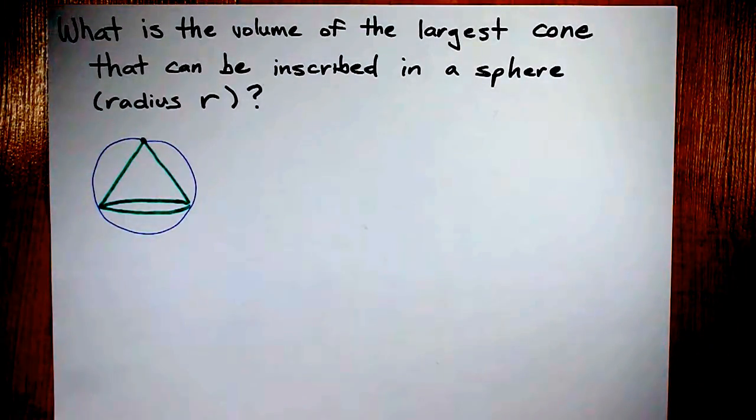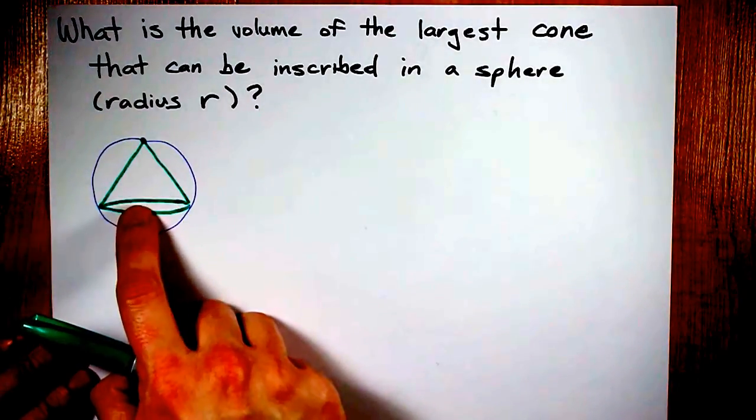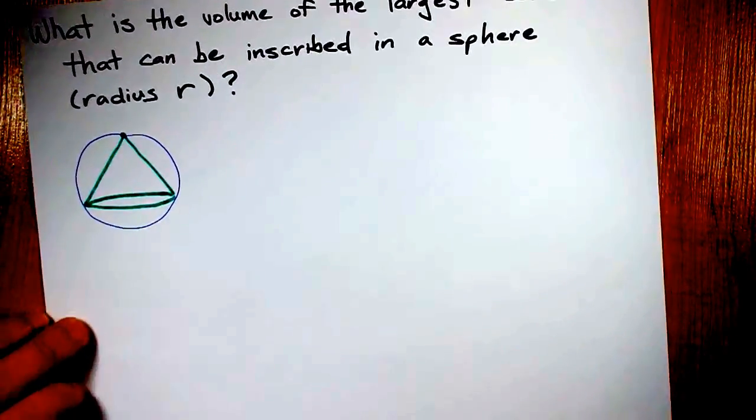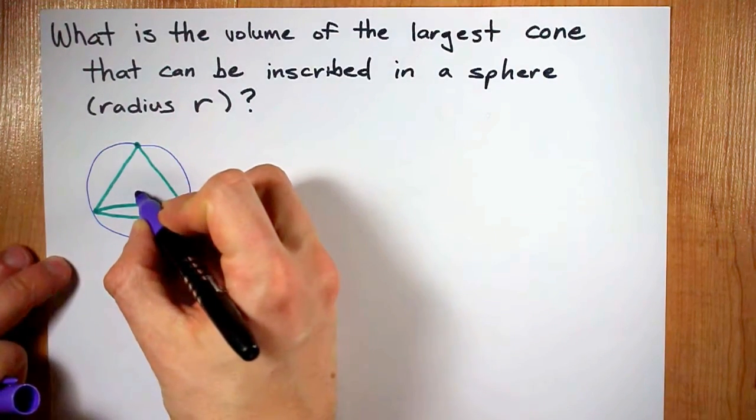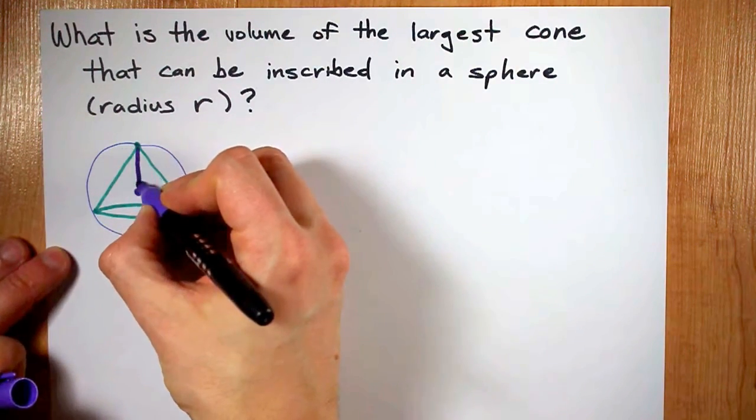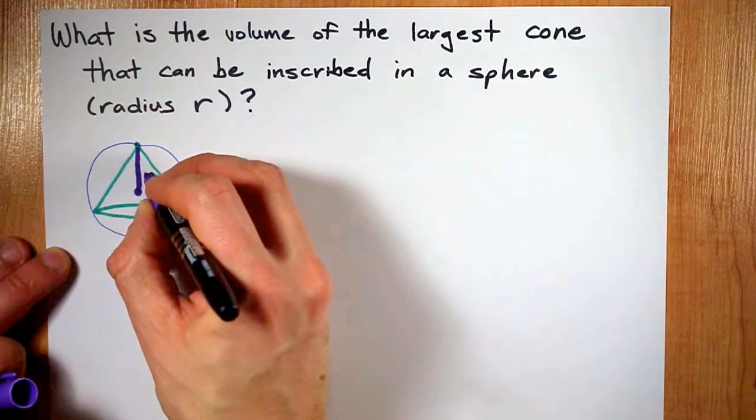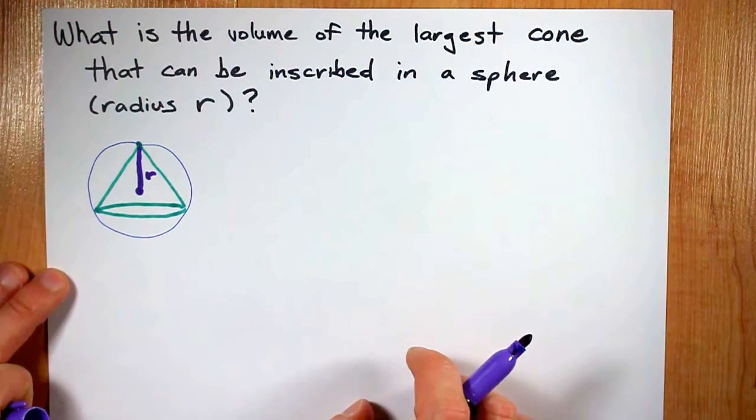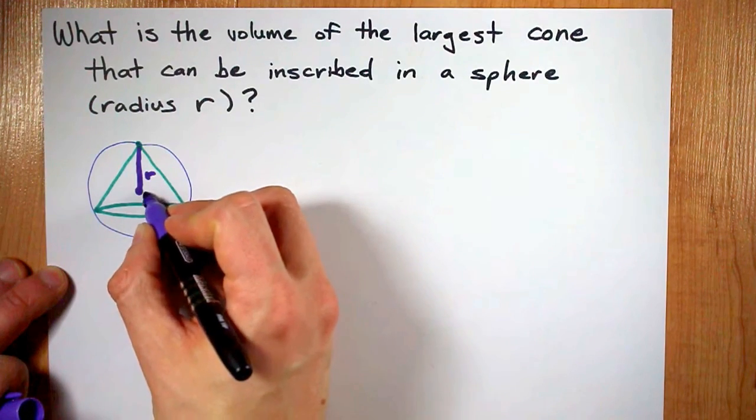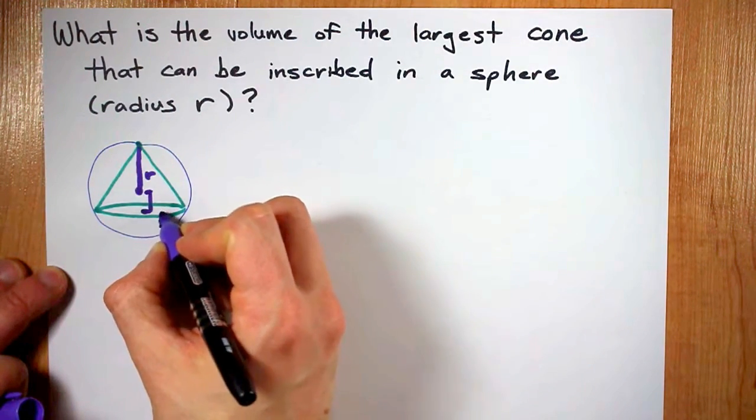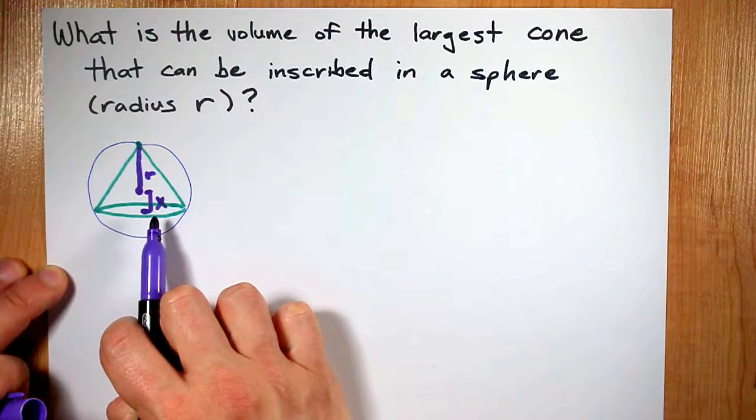Now, the question is, how can we relate the size of this cone to different dimensions? Well, first of all, I want to point out that this cone is taller than the radius of the sphere you're putting it in. And how much taller the cone is than that radius is going to be the variable that I want to change, this amount x.